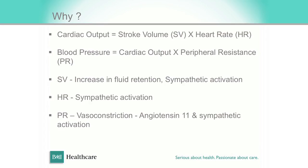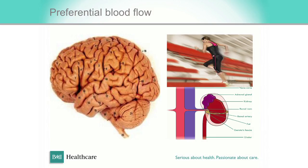Why does the body do this? The main reason is to maintain cardiac output. So it increases stroke volume, increases the heart rate, and increases the peripheral resistance. This is just to say the heart likes the brain, but hits every other organ, including skin, muscles, splanchnic vessels, and the kidney.